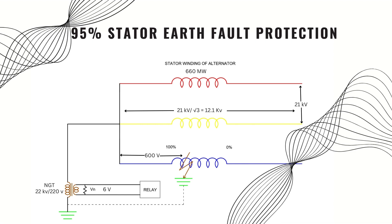The relay is set at this voltage and the time setting will be 1 second. That means if the VN becomes 6 volts for 1 second, then the relay will trip the generator.